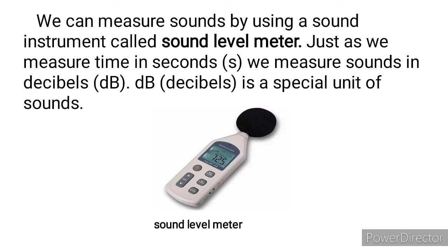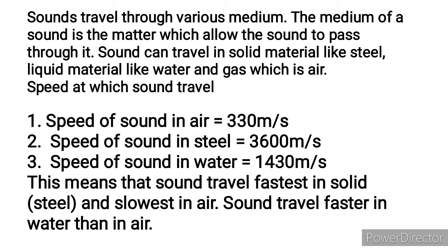Sound travels fastest in steel and slowest in air. We also said that we can measure sound using a sound level meter, measured in the unit called the decibel, written as dB. When everywhere is silent the sound level meter reads zero decibels, and when sound is above 120 dB it is considered noise. The values are: steel is 3,600 metres per second, water is 1,430, while air is 330 metres per second.